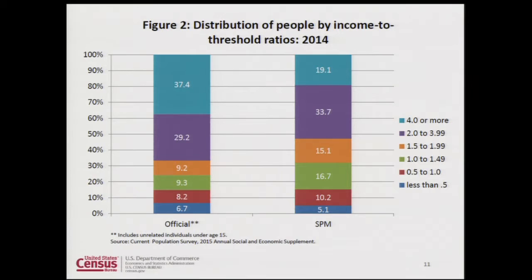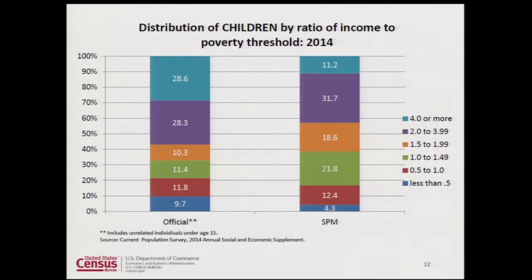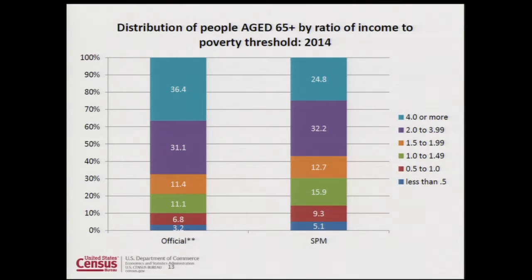We don't show the FGT indexes in our Census Bureau report, as they're a bit more complicated than we'd want to include. Instead, we show income-to-poverty threshold ratios. In the report's figure, the bottom blue chunk of each bar represents the proportion in deep poverty under each measure. We can see that although the SPM poverty rate is a bit higher, the proportion in deep poverty is lower, capturing the fact that non-cash benefits are bringing people up from the bottom of the distribution — the same pattern for children, and an even bigger difference for the elderly.